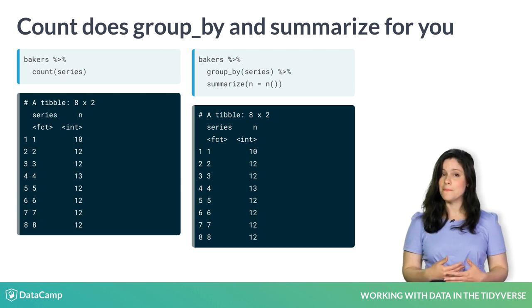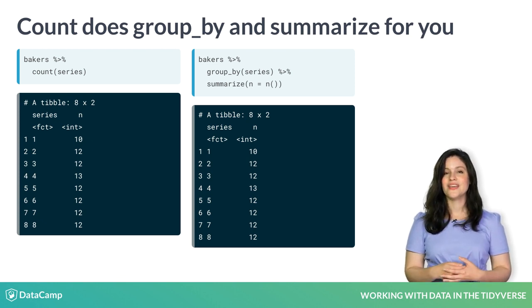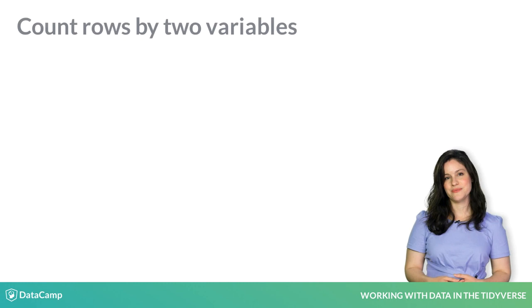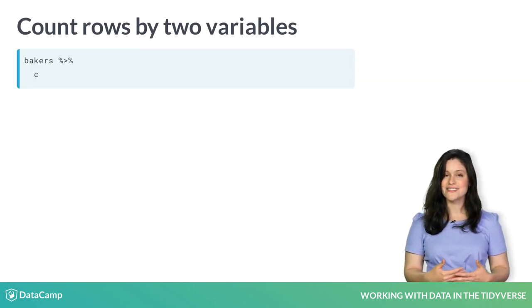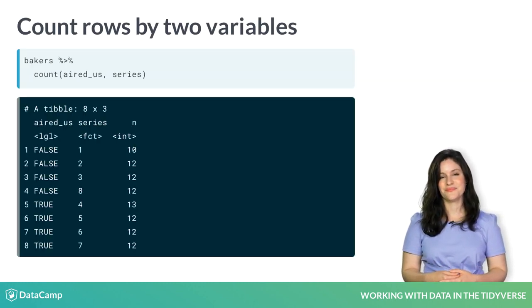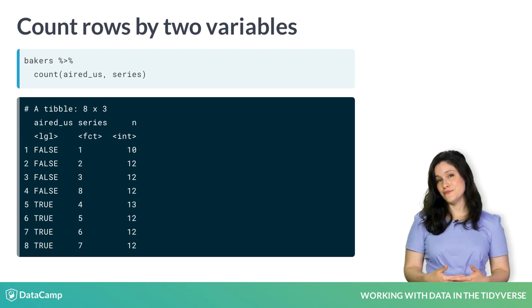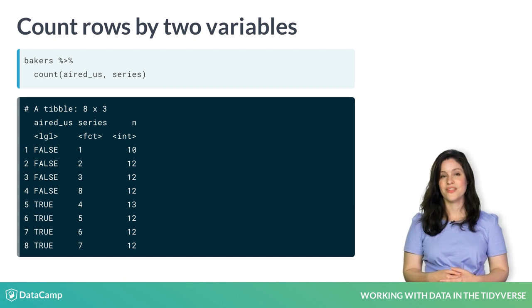We can also count by more than one variable. Here, we count by two variables, aired_US and series. We can see that series 4, 5, 6, and 7 have aired in the US. The 'n' column is still the number of bakers.